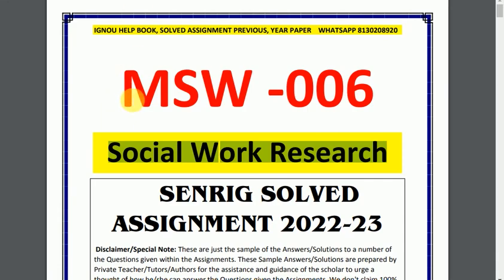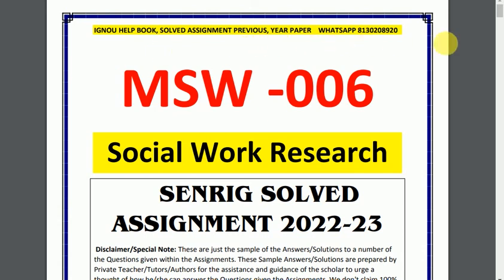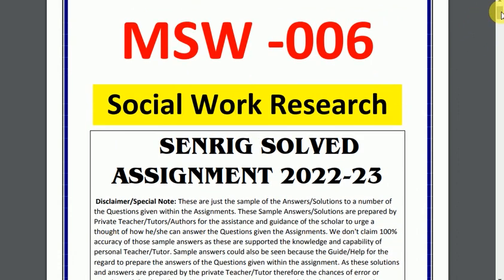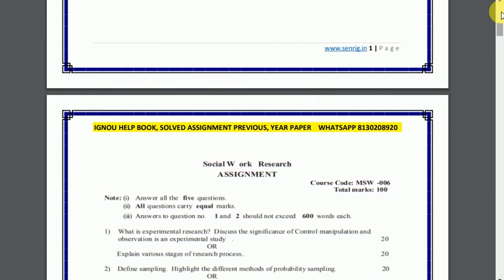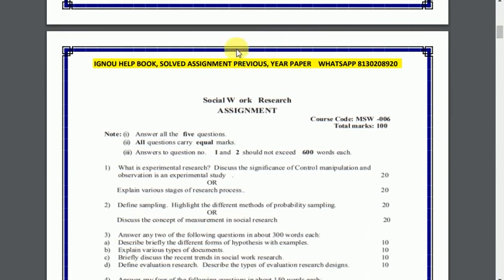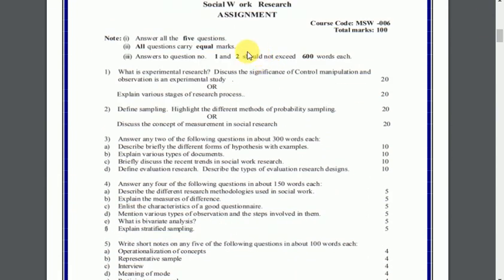Now let's look at MSW 006. Here you have the assignment question paper, which you need to check for your course codes and read the questions once again. To understand the assignment, watch the video carefully, and if possible, watch it multiple times so you can understand it properly.